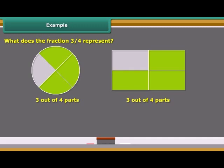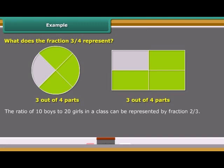The ratio of 10 boys to 20 girls in a class can be represented by fraction 2 upon 3. In the fraction 2 upon 3, number 2 is called the numerator of the fraction and number 3 is called the denominator of the fraction.